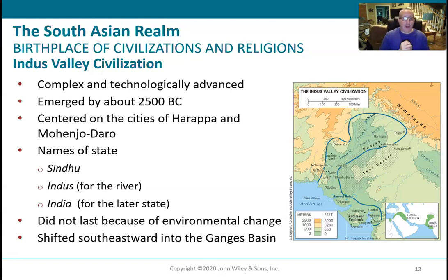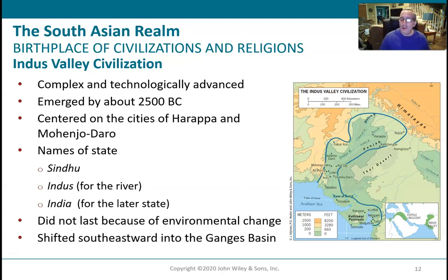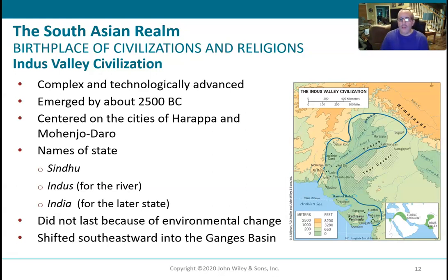The Indus Valley was one of those cultural hearths in ancient times. There was a fairly complex and technologically advanced civilization that formed here about 2500 BC — just after some of the older ones in the Fertile Crescent of Iraq and Egypt. So this is another hot spot of ancient culture and development.